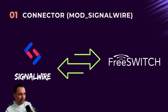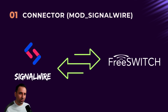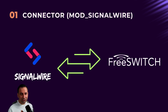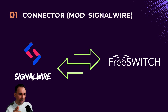The first option is the SignalWire Connector, or mod_signalwire. This is specifically for if you have a FreeSwitch system or FusionPBX system and you want to connect it to SignalWire. There is a mod_signalwire module that you can load in your FreeSwitch and easily connect your system to SignalWire. I have a very detailed video on how to use this method, and I've put the link in the description. I will also show you how to configure it in the SignalWire panel.